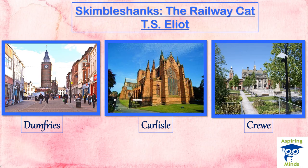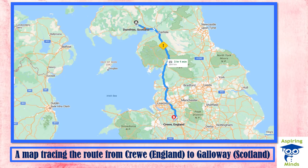Here are pictures of the towns and cities mentioned in the poem — Dumfries, Carlisle, and Crewe — showing how they look in the present times. There is also a picture of a map tracing the route from Crewe in England to Galloway in Scotland, using Google Maps to show how the train covers this entire distance. This will help for easy reference when reading the final stanza of the poem.